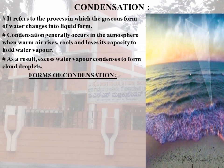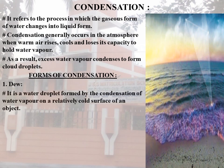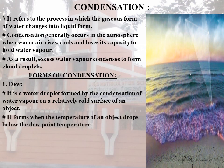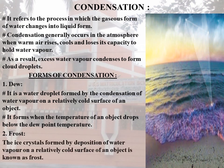Dew, frost, fog, mist, and clouds are the different forms of condensation. Dew is a water droplet formed by the condensation of water vapor on a relatively cold surface of an object. It forms when the temperature of an object drops below the dew point temperature. The second form is frost. Frost is the ice crystal formed by deposition of water vapor on a relatively cold surface of an object. It forms when the temperature of an object drops below the freezing point of temperature.